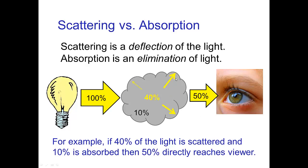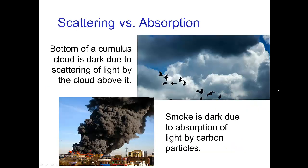Say 40% of the light is scattered out of the line of sight of the viewer, and 10% of the light is absorbed by the particles, so a resulting 50% of the light passes through the cloud to the viewer. Now, it's not always easy to realize what's going on in terms of what's due to scattering versus what's due to absorption.